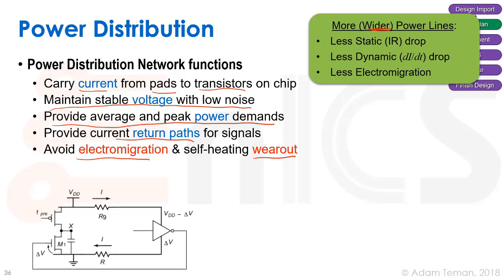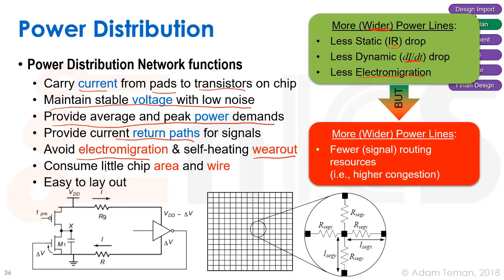We make wider power lines, which gives smaller R and therefore less static IR drop. We also get less dynamic DI/DT drop — caused by large inductances in package-to-chip connections when current changes suddenly at a rising clock edge. Wider wires also reduce electromigration since there's a lower probability of an atom being displaced. However, wider power lines consume chip area and reduce routing resources, increasing congestion — so these goals contradict each other.